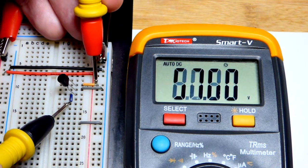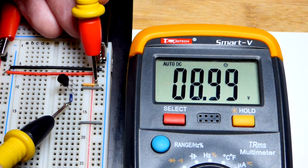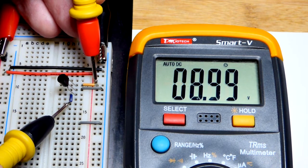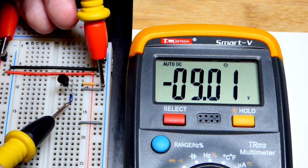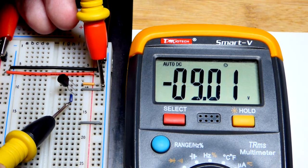So then in relationship to that, the positive supply there is a positive 9 volts, whereas the negative supply is negative 9 volts, as you can see there.